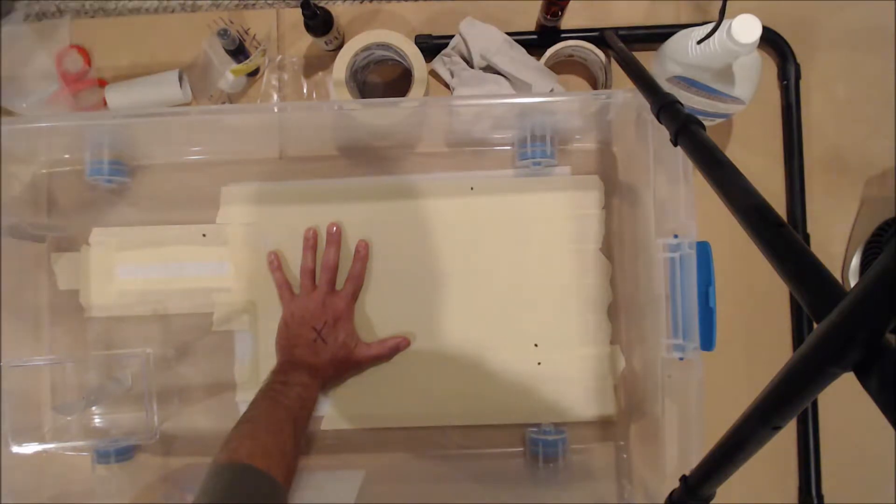So what we're going to try to do next is simulate an inanimate object, for example luggage. I'll just have it represented by this paper towel roll.